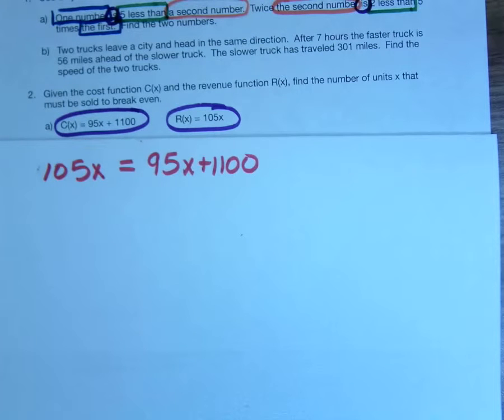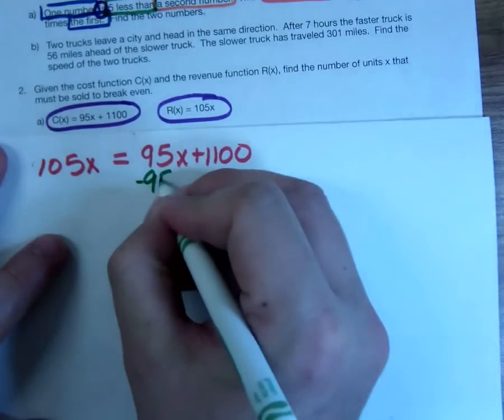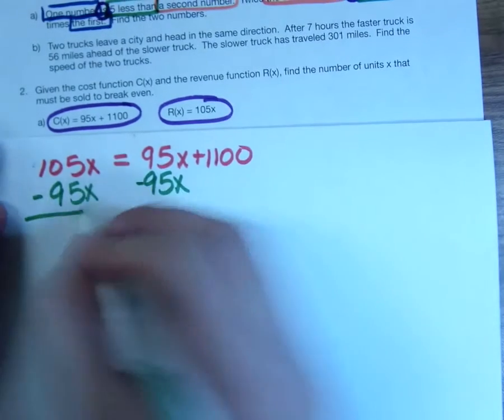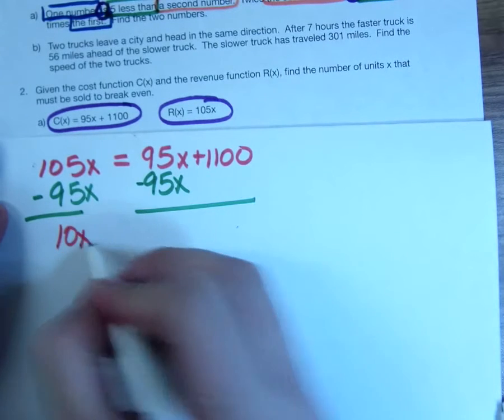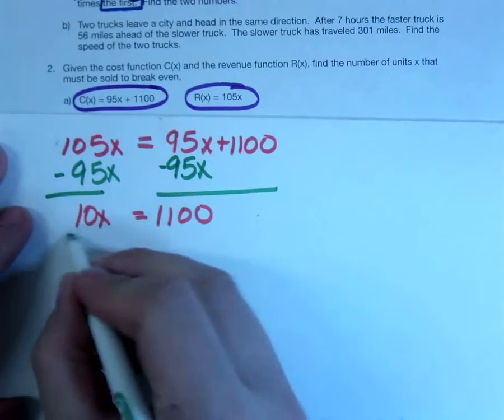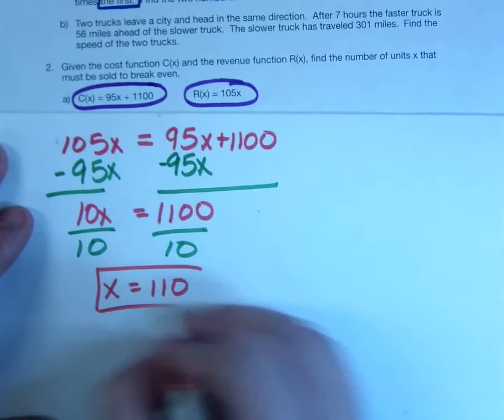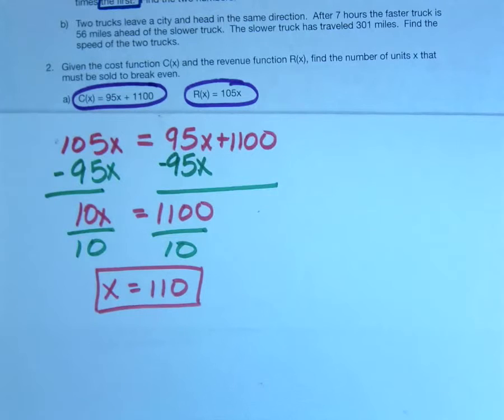How do I solve this? Subtract the X's. That gives me 10X equals 1100. Divide by 10. Divide by 10 is really easy, you just lop off a zero. So how many things do I have to sell to break even? 110, which means when I sell my 111th pair of headphones, I make $10. Volume is important. If I could sell a million pairs of headphones, I'd be in good shape.